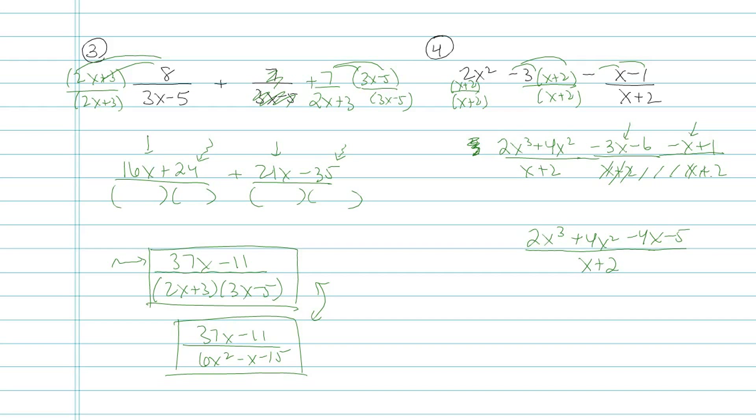From there, I want to see if I could factor that top, see if anything on top and bottom cancels out. If you know how to do synthetic division, you could check to see if negative 2 is a zero for that top polynomial. To see if it would cancel out, you'll find out that it doesn't. Your remainder is not zero. So in fact, that's your final, most simplified answer.